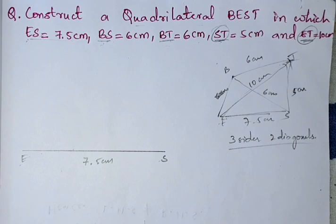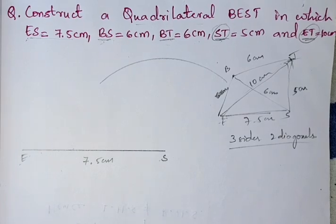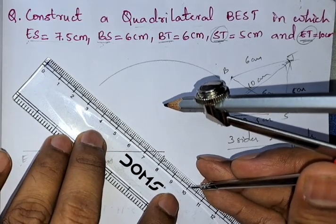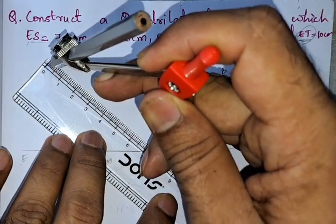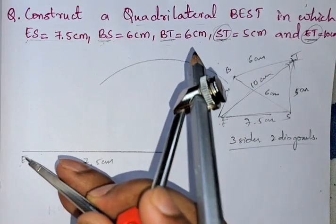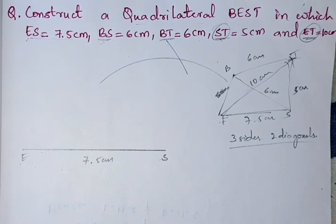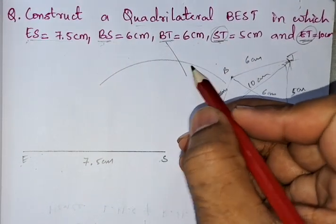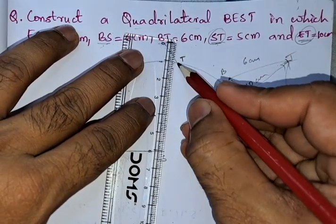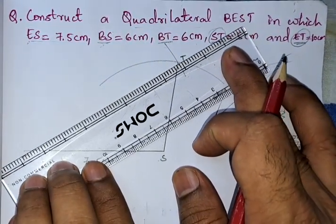We have 5 cm on the compass. From S, we draw an arc of 5 cm. Next, from E to T is 10 cm, so we set the compass to 10 cm. From E, we draw an arc of 10 cm. The point where the two arcs meet is point T. We join T to S and E to T — this gives ST = 5 cm and ET = 10 cm.